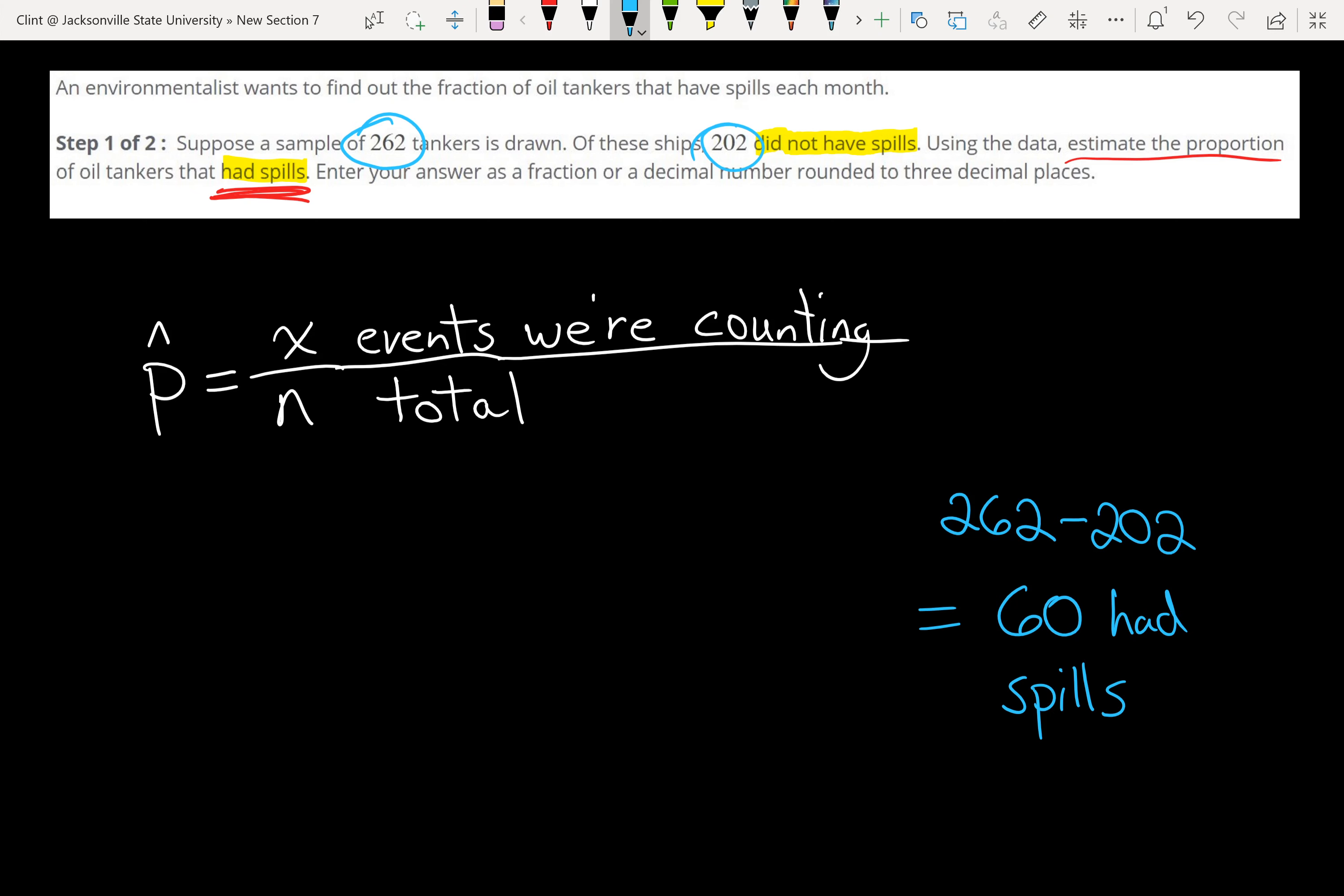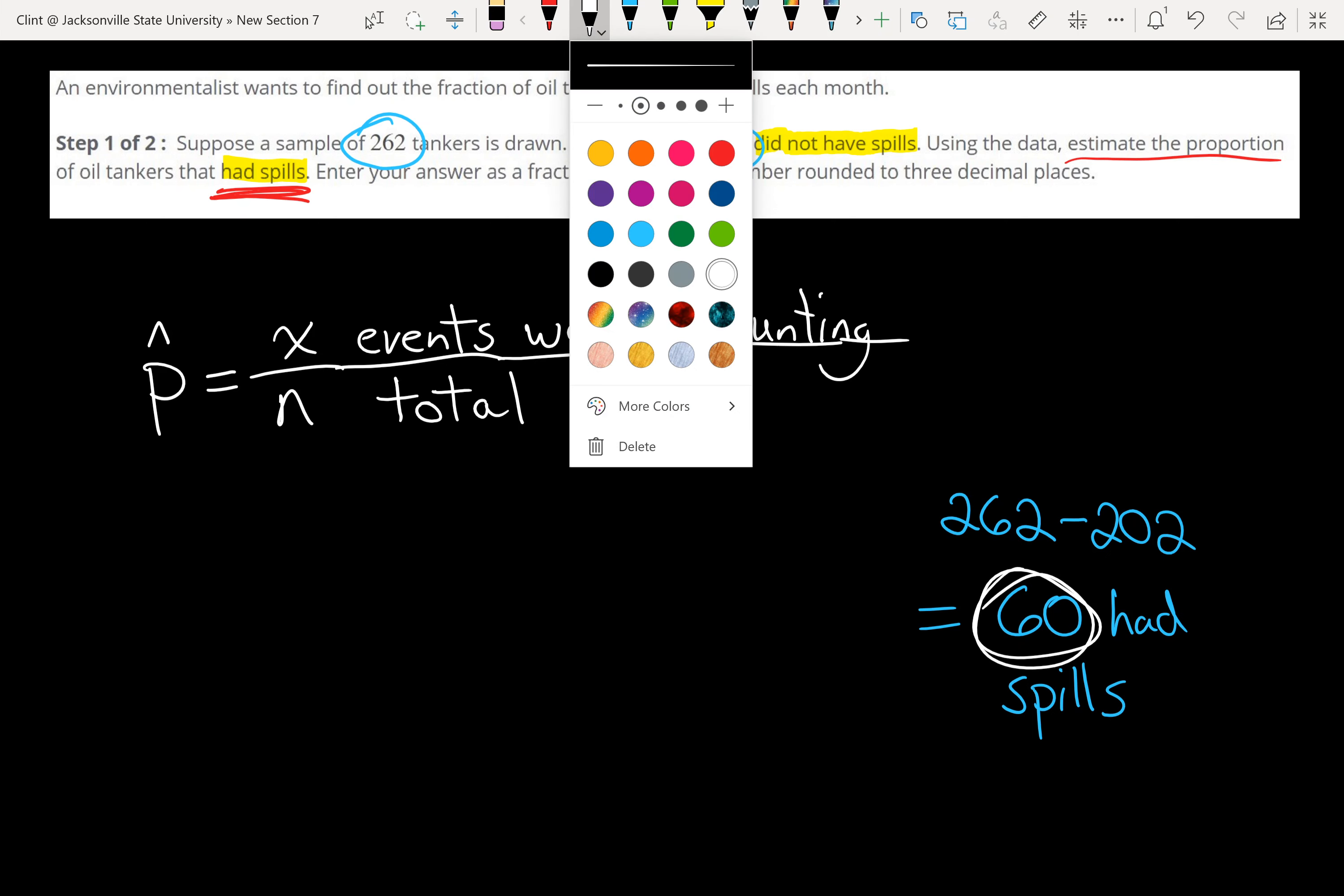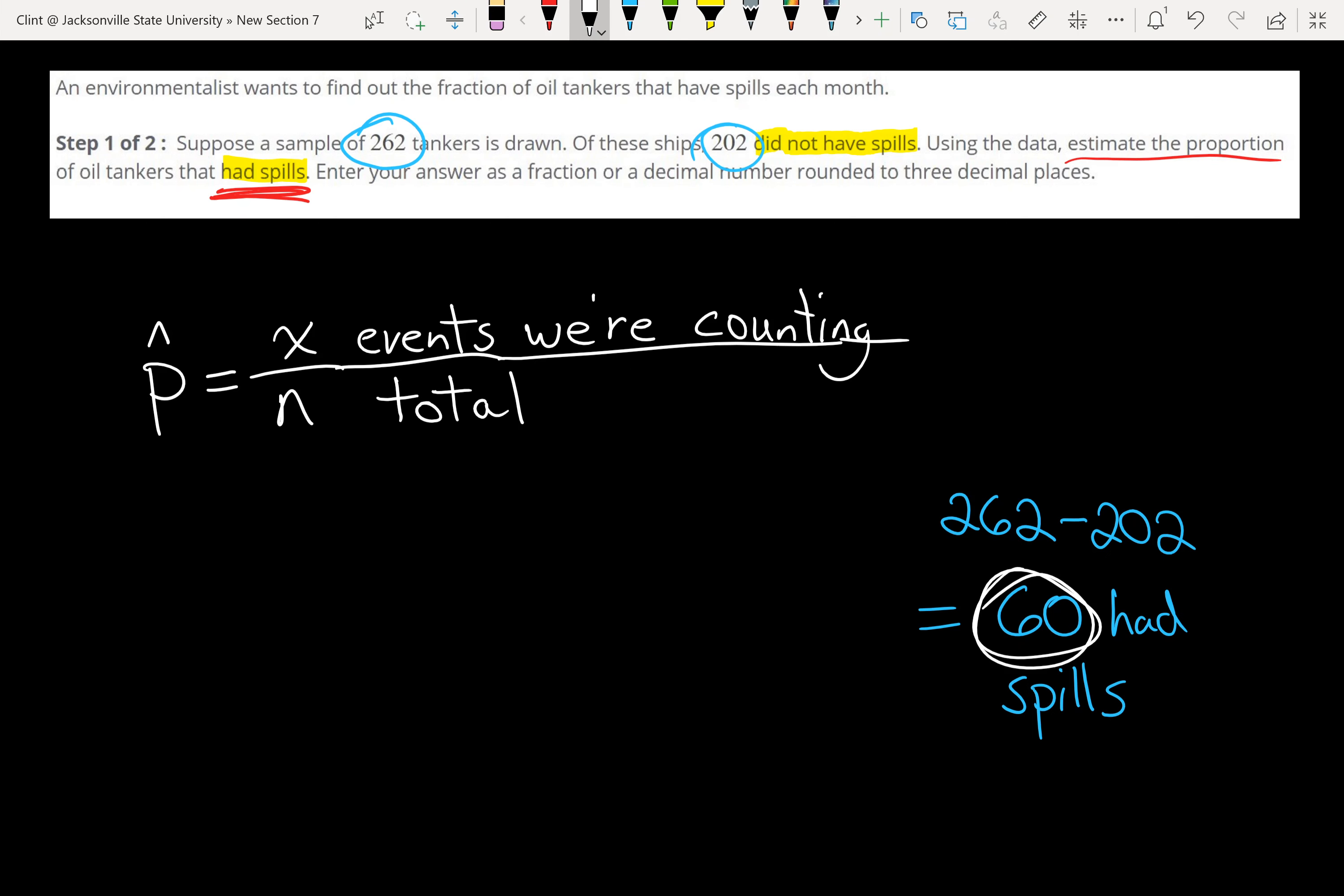So 60 had spills, so 60, that's our number that we're counting, because we care about what proportion had spills. So p-hat, and that's going to be our top number, 60, out of the total number of tankers. The total number of tankers here is 262.